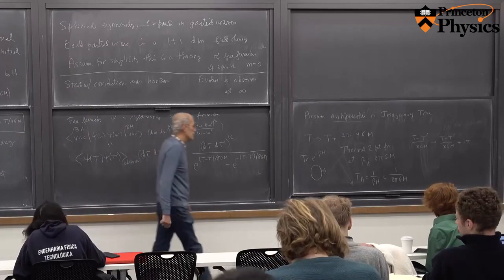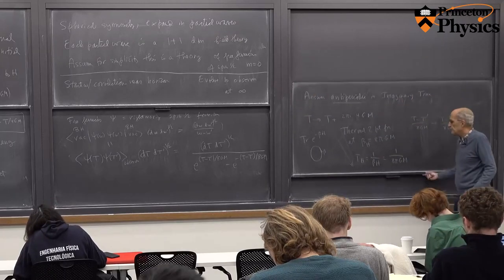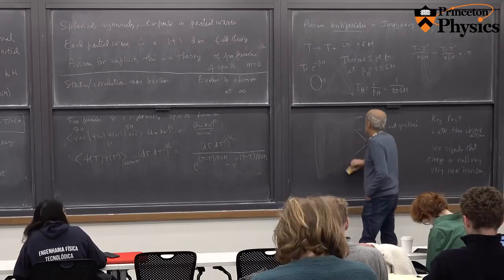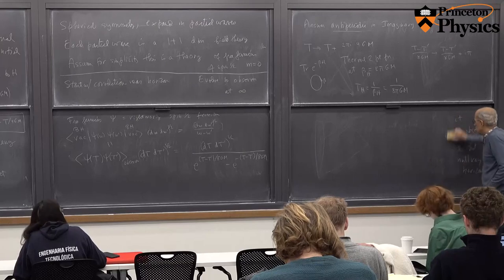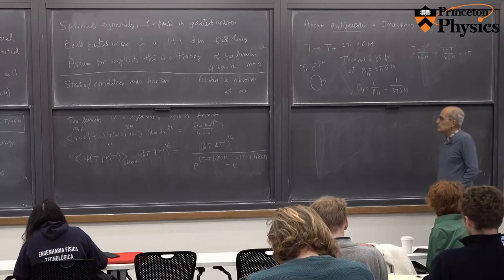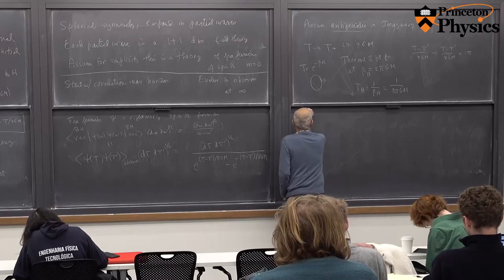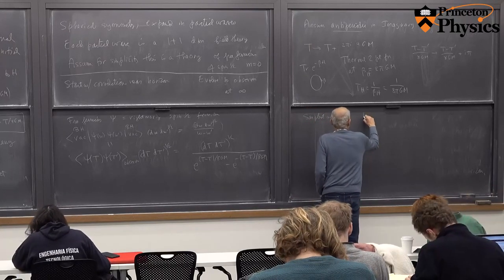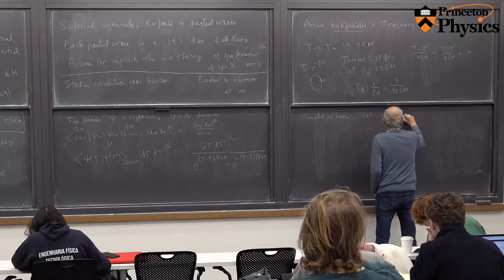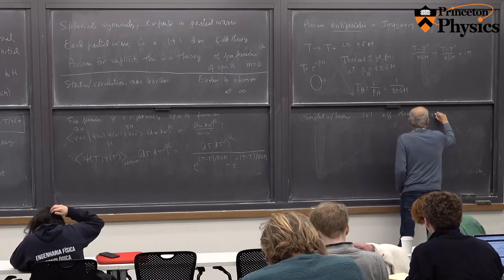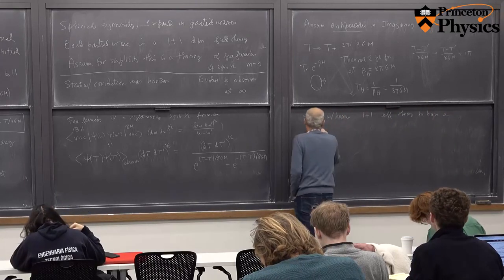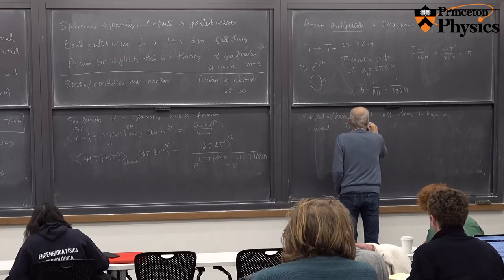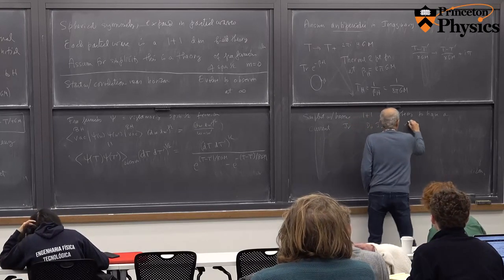This is the essence of how Hawking discovered that a black hole at late time is emitting thermal radiation. Here we took the thermal radiation to be fermions, free in the 1+1-dimensional sense.